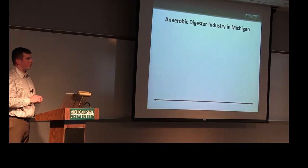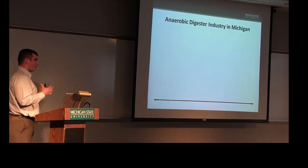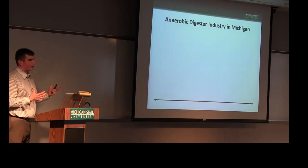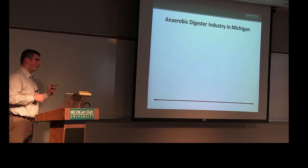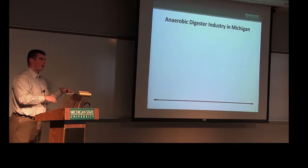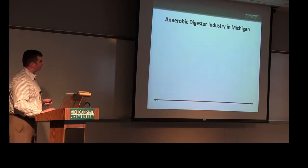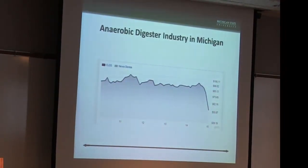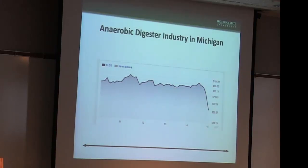Switching gears to talk about digesters in Michigan — where we are as a state is pretty reflective of where we are in the United States and North America, with the exception of Ontario. This graph shows oil prices over the last five years — the digester industry in the U.S. has been steady but not really increasing for the last five to ten years. We've really seen things drop off along with most renewables due to low oil prices. Yesterday we were looking at $45 a barrel, which has set us back quite a bit when it comes to biogas.